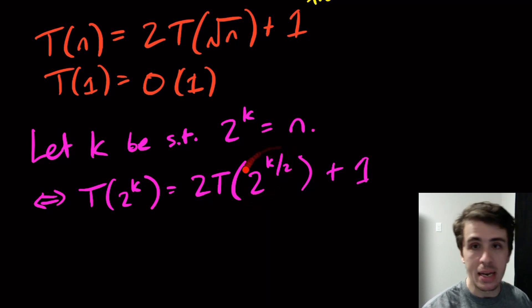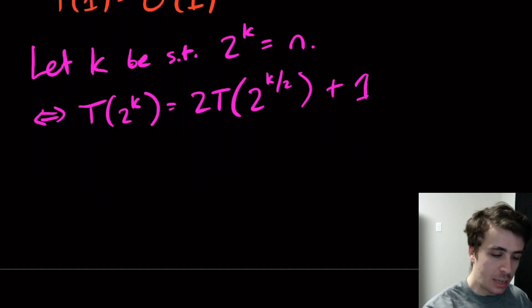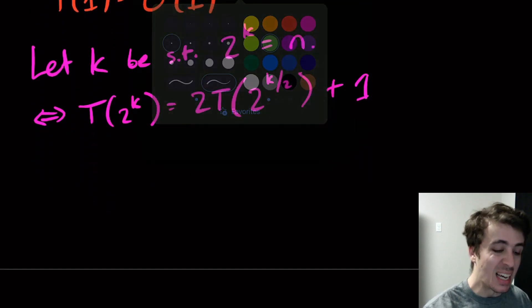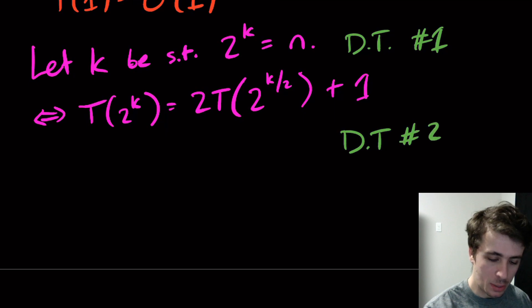This is not quite in the right format either, because this is not k divided by a certain thing. It's k divided by something in the exponent, but that's not what we actually want here. So we're going to actually do domain transformation again. This was domain transformation number one, and now we're going to do domain transformation number two. Instead of looking at the parameter, we're going to look at the whole function itself.